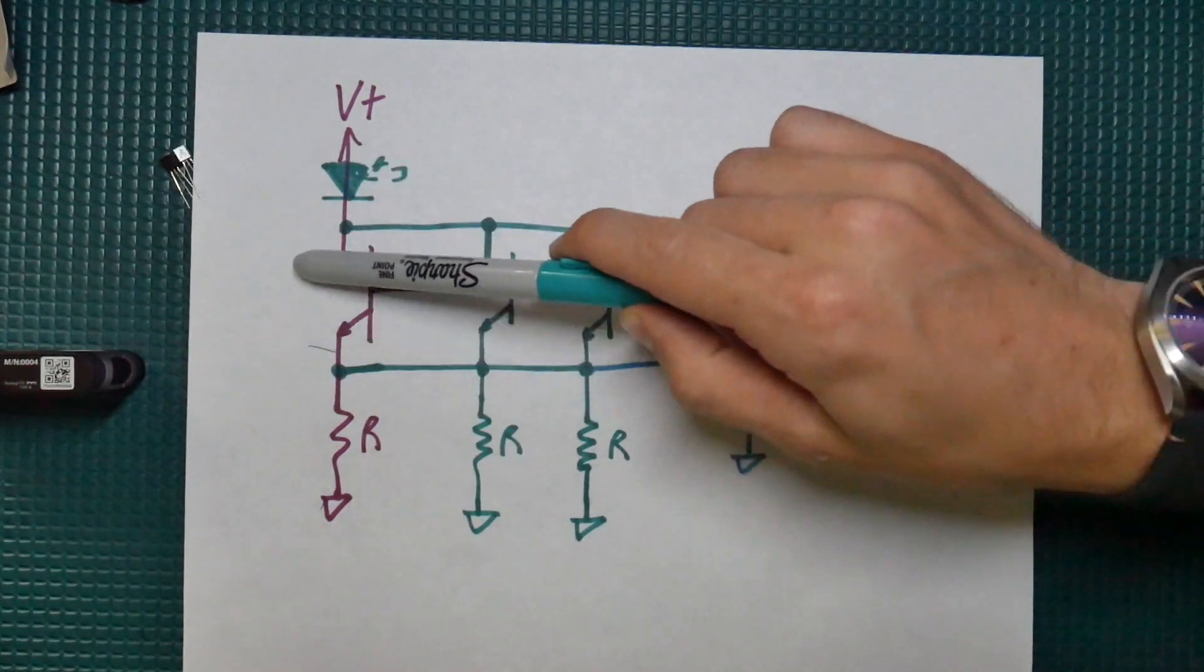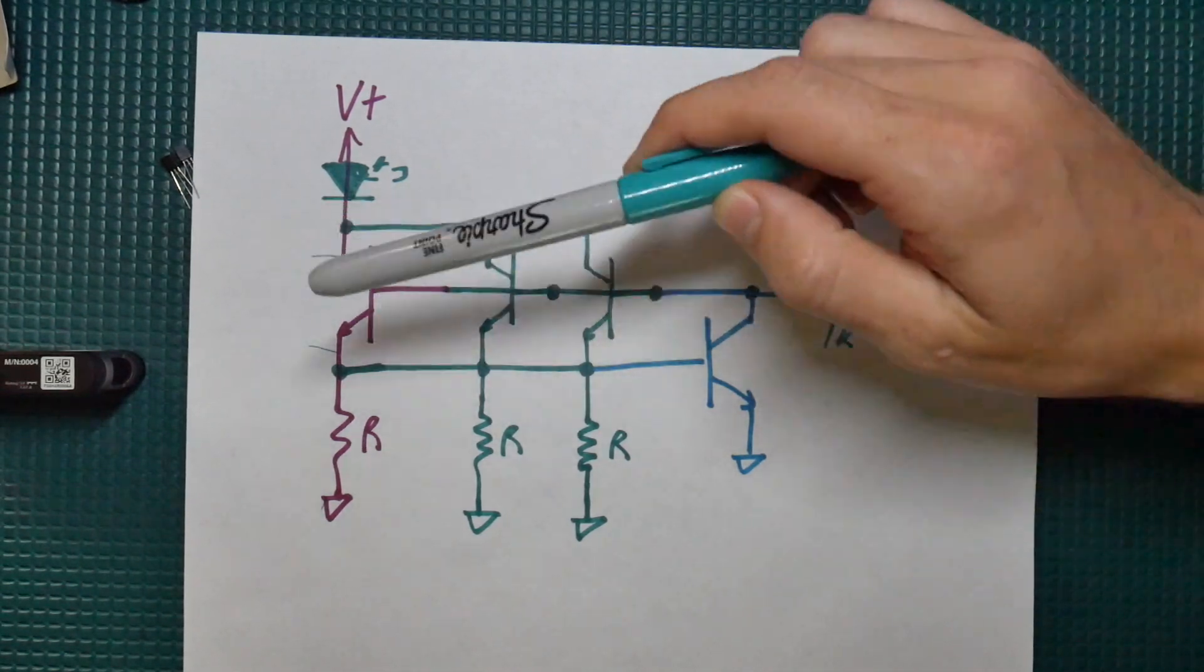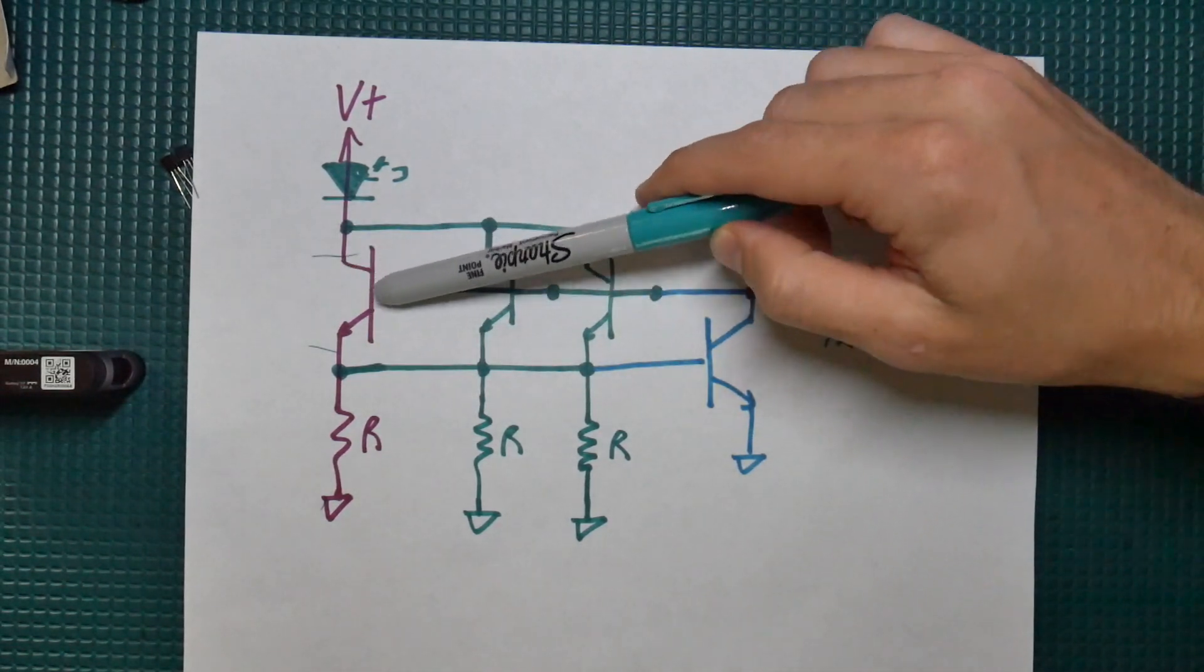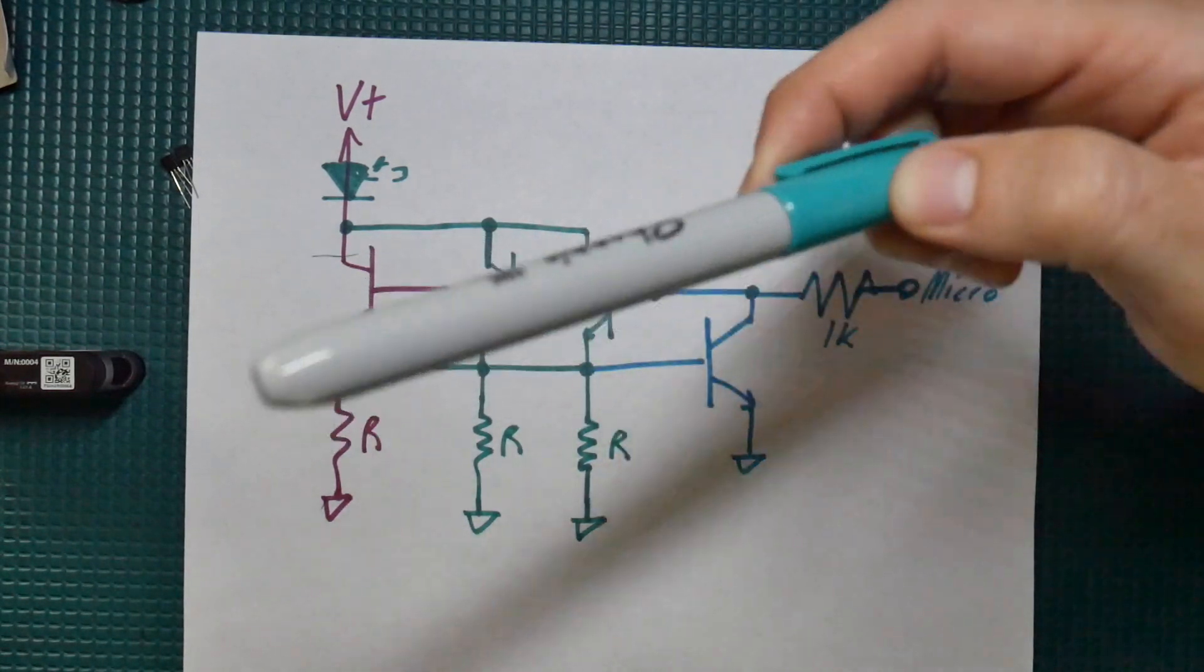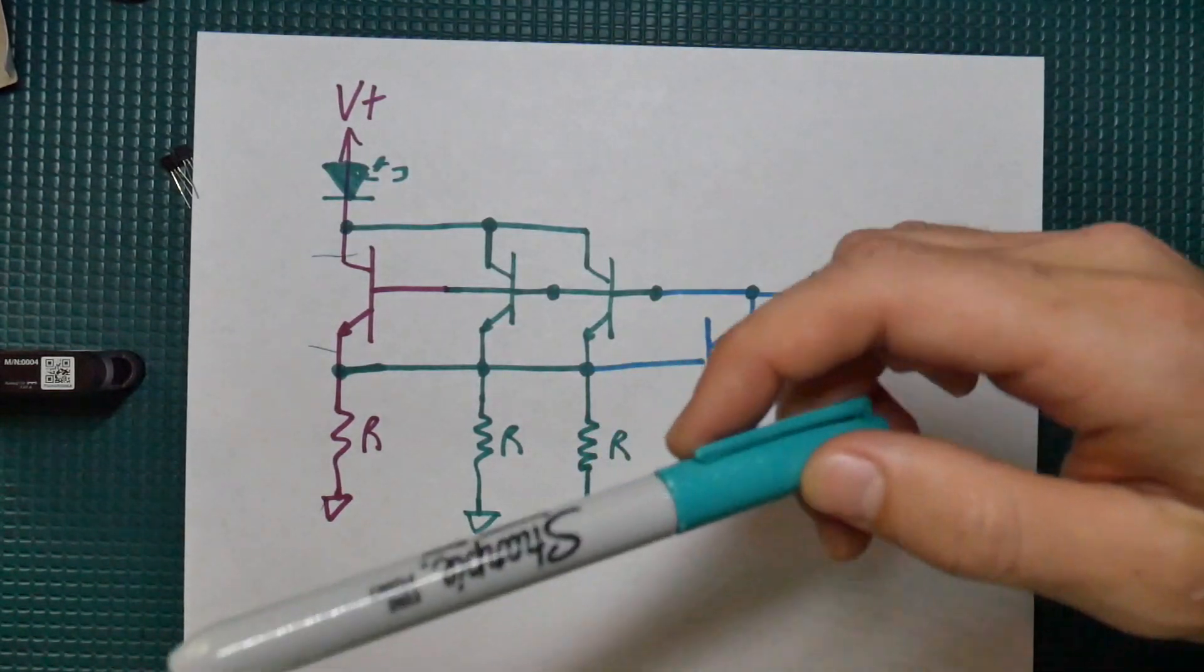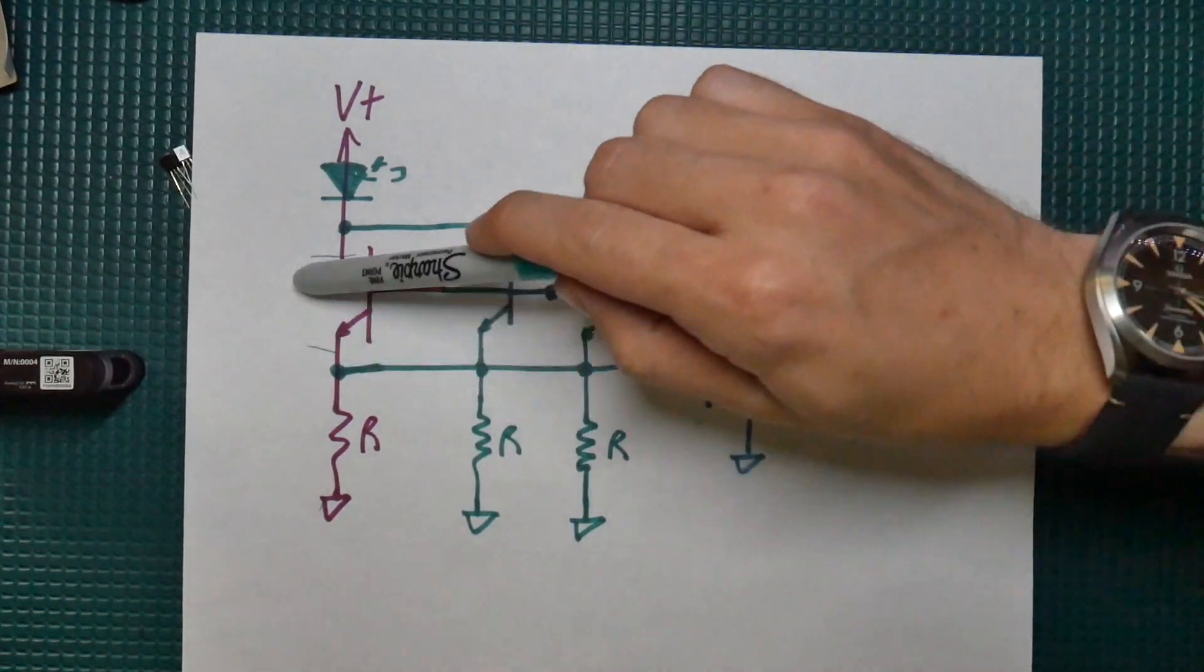Because as soon as one of them gets a little tiny bit more current than the others. More current equals heat equals more power dissipation on that transistor. And then what happens is as it heats up it's going to then increase the temperature. Increase the temperature means more current through it means more temperature. So you have that vicious endless cycle until that transistor is taking all of the current.